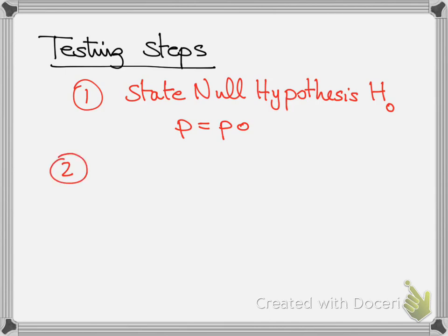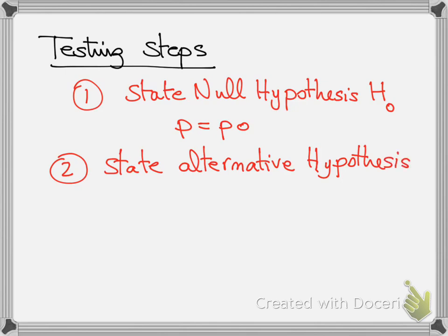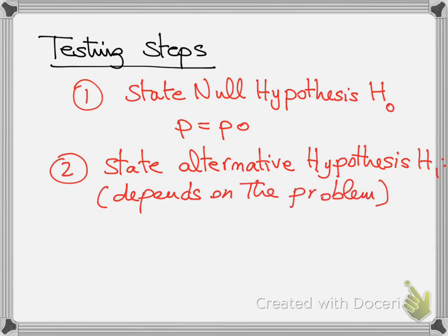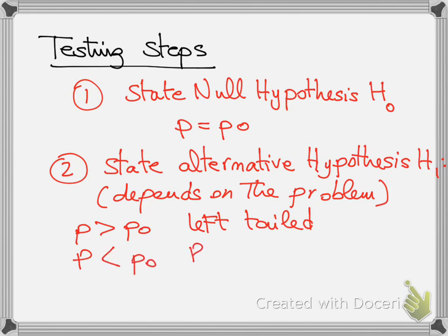Step two: state the alternative hypothesis H1 — this depends on the problem. There are three cases: p greater than p0 (left-tail test), p less than p0 (right-tail test), or p different from p0 (two-tail test).